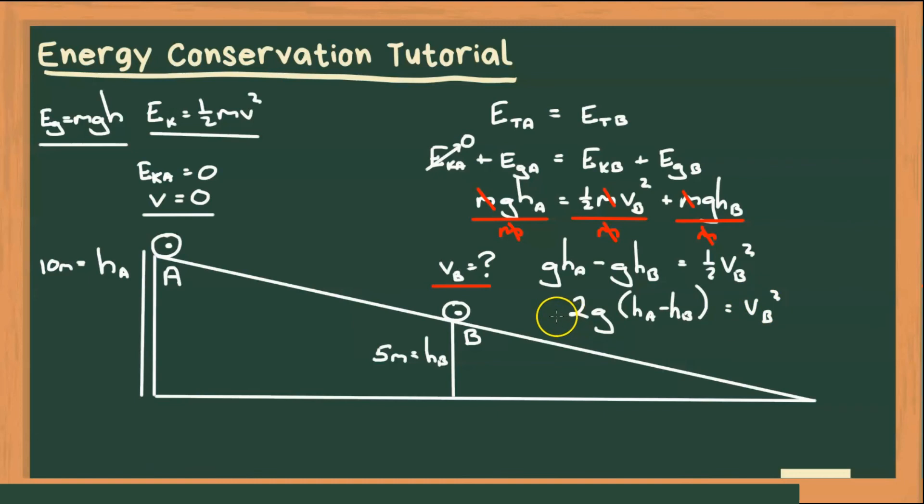So now you can solve for VB by taking the square root of both sides of the equation. And we get that VB is equal to the square root of 2 times G, which is 9.8 newtons per kilogram, times our change in height, which is 10 meters. So that's HA, 10 meters, minus HB, which is 5 meters. So 10 meters minus 5 meters. And that gives us a speed of 9.9 meters per second.